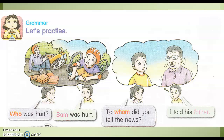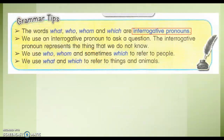Before that, let's look at the grammar tips. The words what, who, whom, and which are interrogative pronouns. 这四个呢，都是疑问词。 We use an interrogative pronoun to ask a question. The interrogative pronoun represents the thing that we do not know.